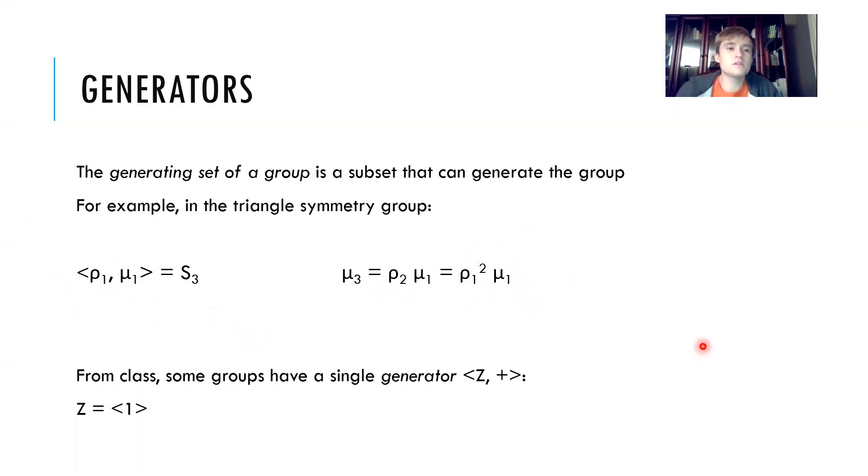This introduces a new definition of what a cyclic group means. It's interesting to note that we can now define a cyclic group as a group with a generating set of order one. For example, Z can be written as the generating set of one, and that generating set has order one, so that means that Z is cyclic.